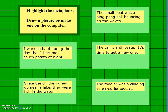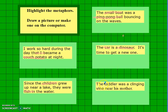Now let's try to find the metaphors on this page. 'I work so hard during the day that I became a couch potato at night' — comparing the person to a couch potato. 'Since the children grew up near a lake, they were fish in the water' — comparing the children to fish. 'The small boat was a ping-pong ball bouncing on the waves' — comparing the boat to a ping-pong ball. 'The car is a dinosaur — it's time to get a new one' — comparing the car to a dinosaur, meaning it's very old. 'The toddler was a clinging vine near his mother' — comparing the toddler to a clinging vine, imagining him hanging all over his mother.